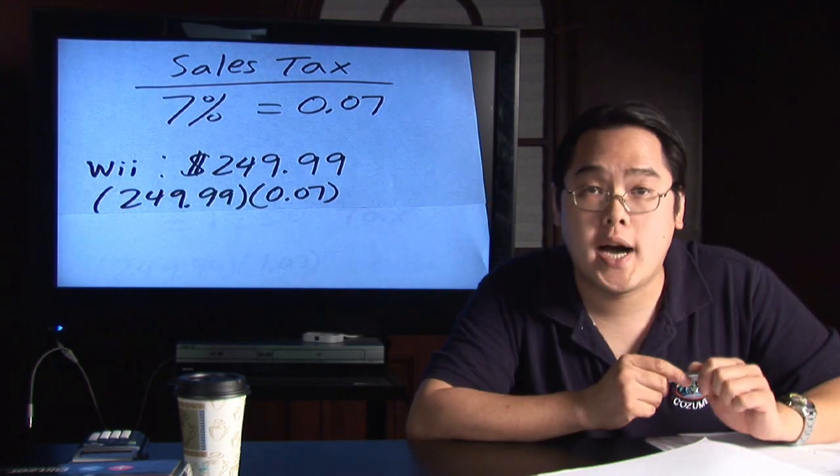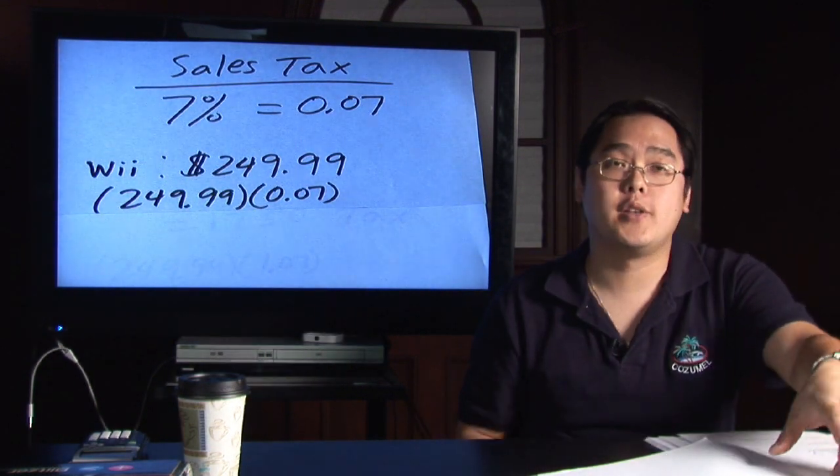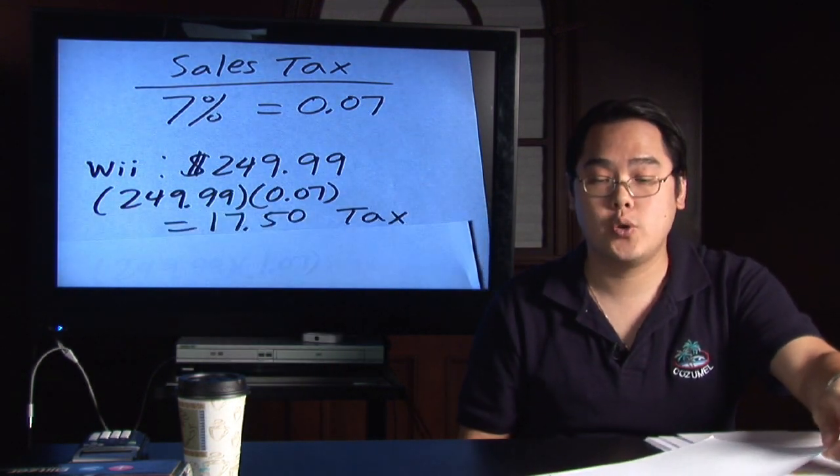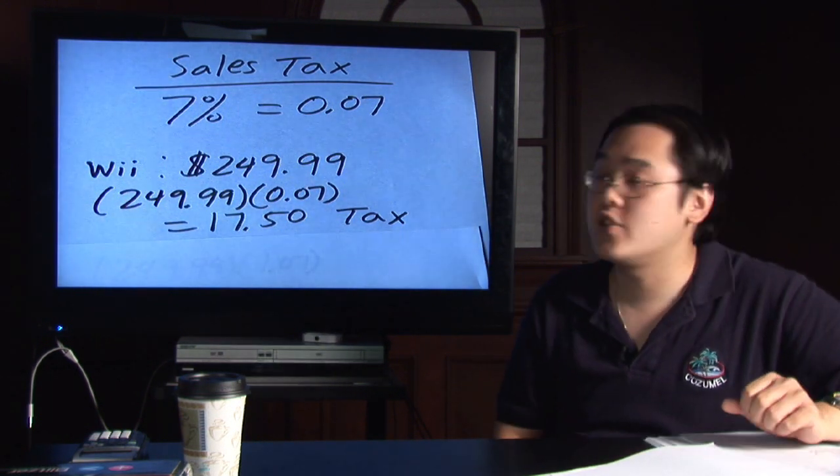A calculator is very handy here. But because we are talking about dollars and cents, you want to round to two decimal places. So when you multiply those two numbers, you will get a grand total of a sales tax of $17.50.